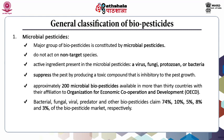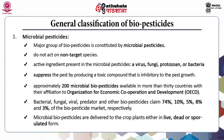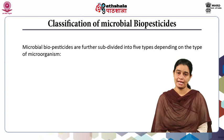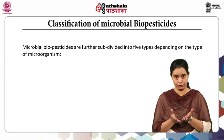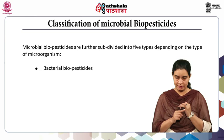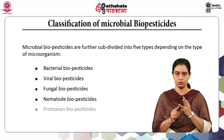Microbial biopesticides are delivered to crop plants either in live form, dead form, or sporulated form. Microbial biopesticides are further subdivided into five types depending on which type of microorganism is involved. These five subtypes are bacterial biopesticides, viral biopesticides, fungal, nematode, and protozoan biopesticides.